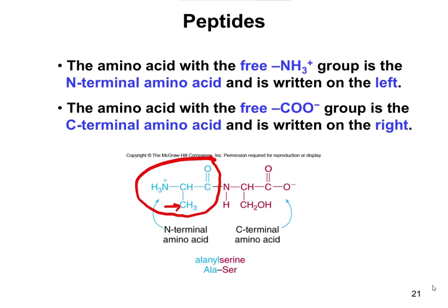Similarly, for the C-terminal amino acid, you look for where you have the free C double bonded to O bonded to O — the free carboxylic acid group. You then look at the R group attached to it, which in this case is CH2OH. You can look it up on your formula sheet and say that one is serine. That's how you work through problems like that.